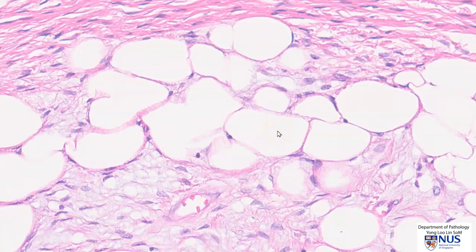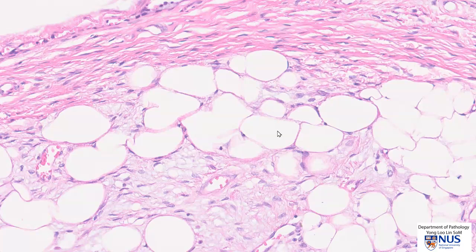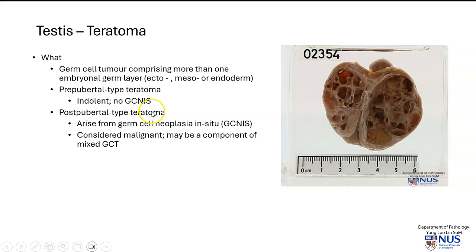So we have tissue from all three layers: ectoderm, mesoderm, and endoderm. Let's have a closer look at testicular teratoma. A teratoma is a germ cell tumour comprising more than one germ cell layer, as mentioned. There are two main types.